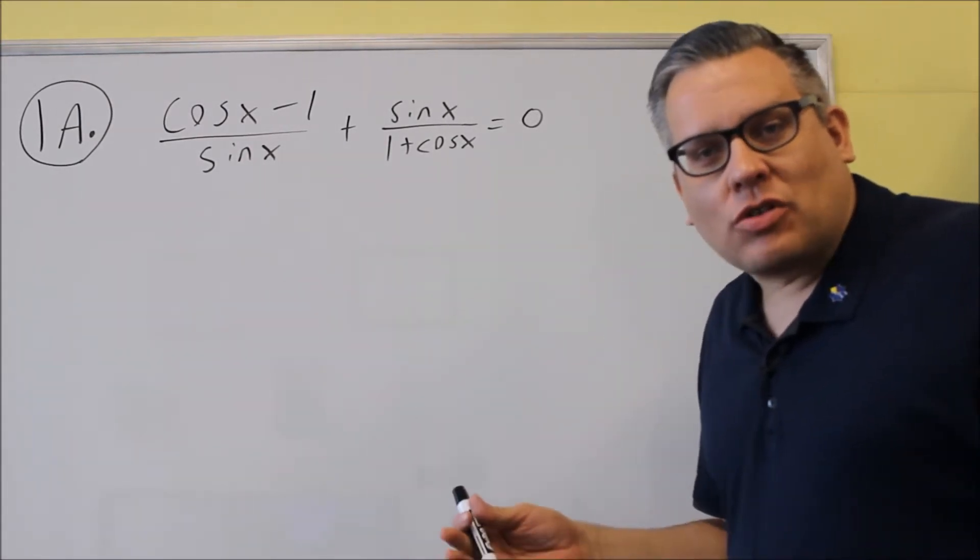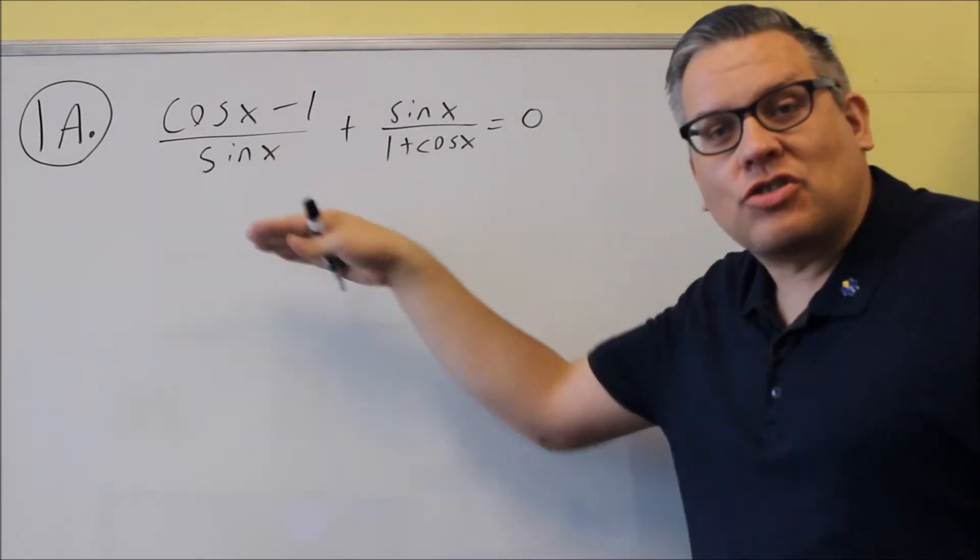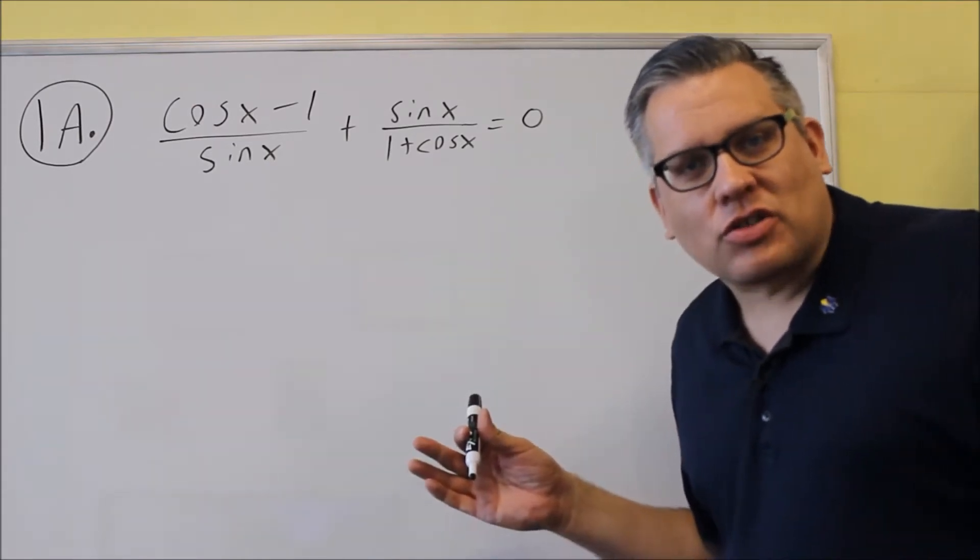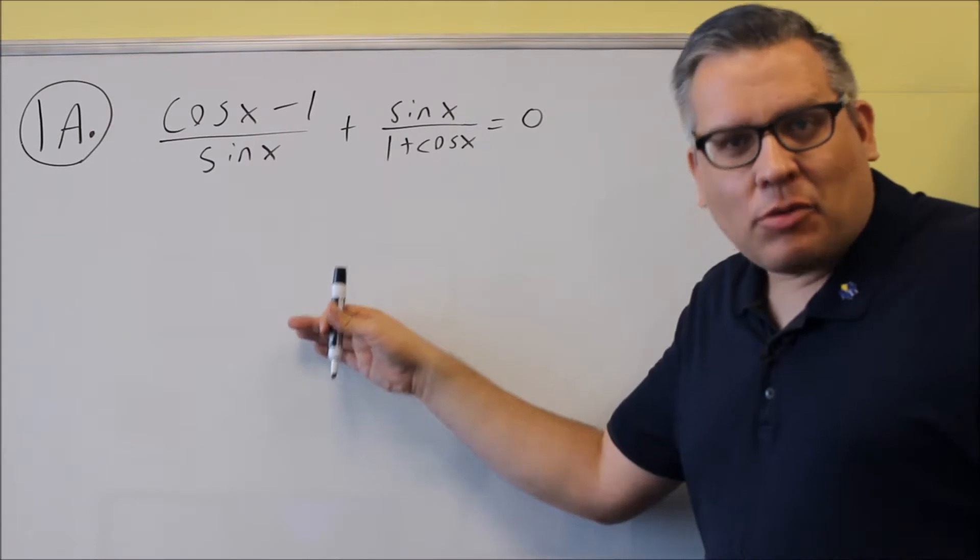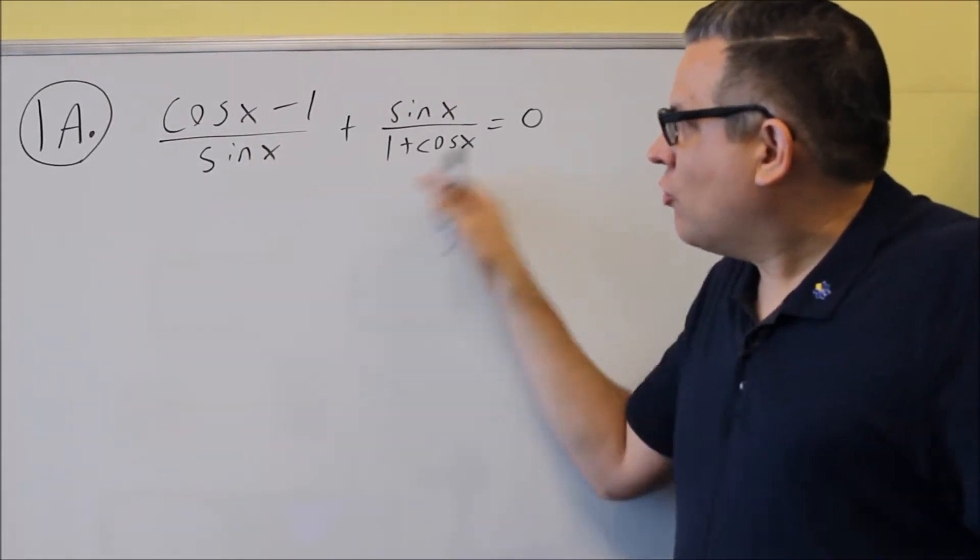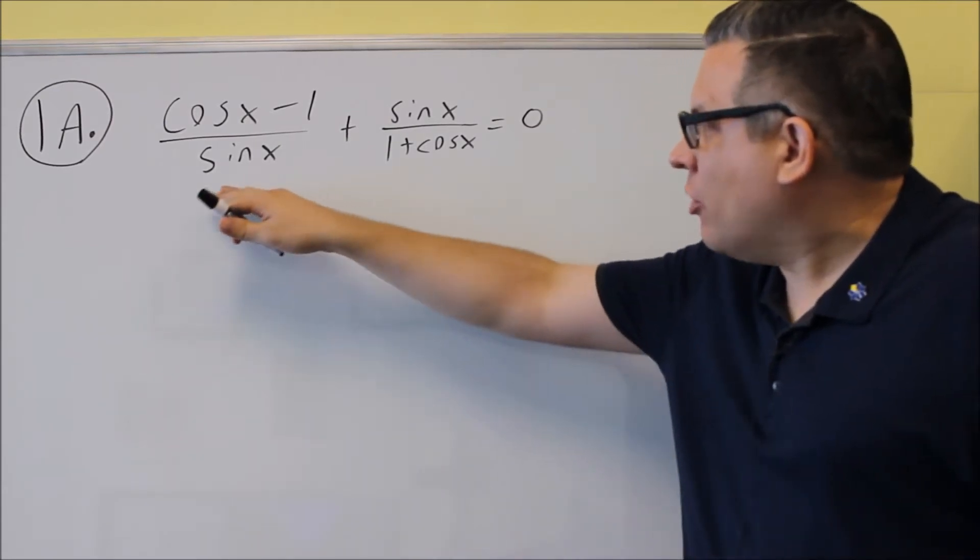So establish the identity, we talked about that in the lecture as far as what strategies you want to look for when you do these problems. Strategies include change everything to sines and cosines, get common denominators, factoring, multiply one side by a conjugate. So when you look at these kind of problems, you want to be thinking about what strategy we're going to use to start out with.